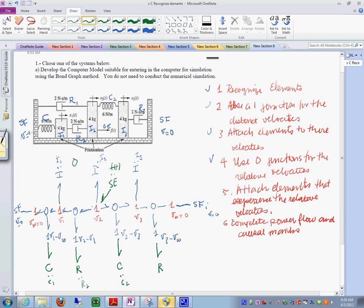And say V sub 2 minus velocity of the wall is going to be like this, right? This V sub 2 minus the velocity of the wall which will have to be like this.